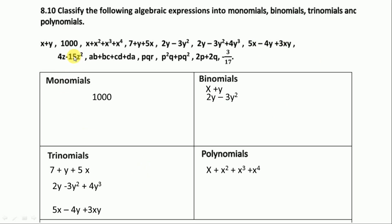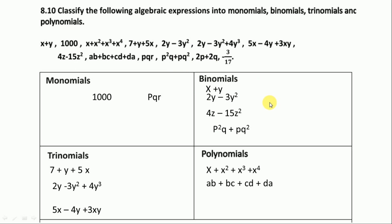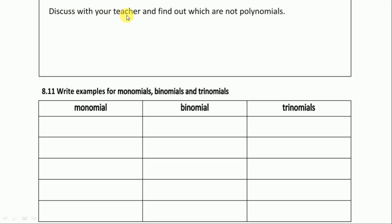Next is binomial. And this one is more than three terms — we write in polynomials. See here, pqr has only one term so we write it as monomial. Here two terms, and this one also two terms — so we write in binomials. Last one, minus three by 17, is monomial.